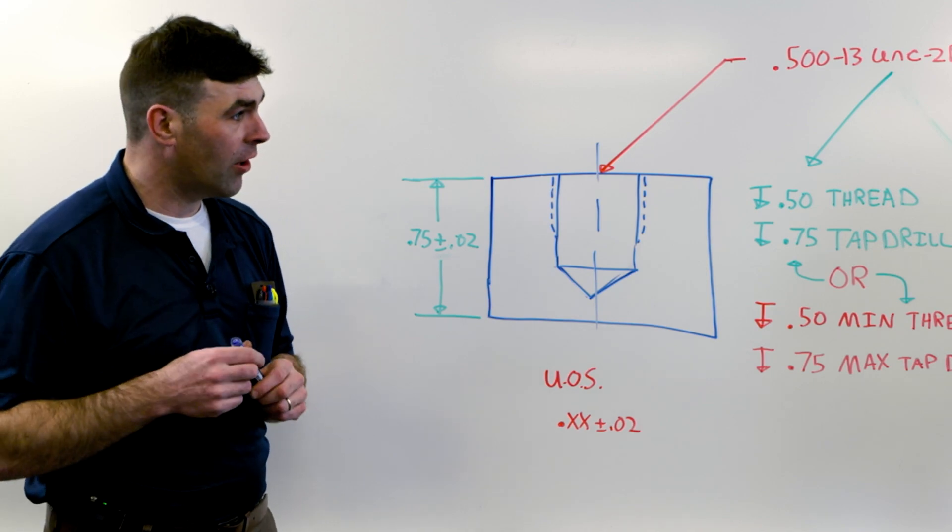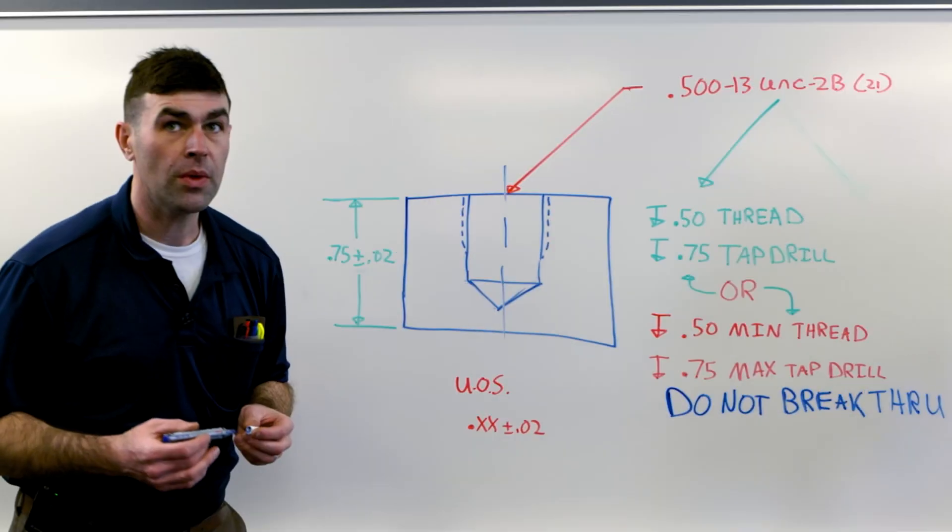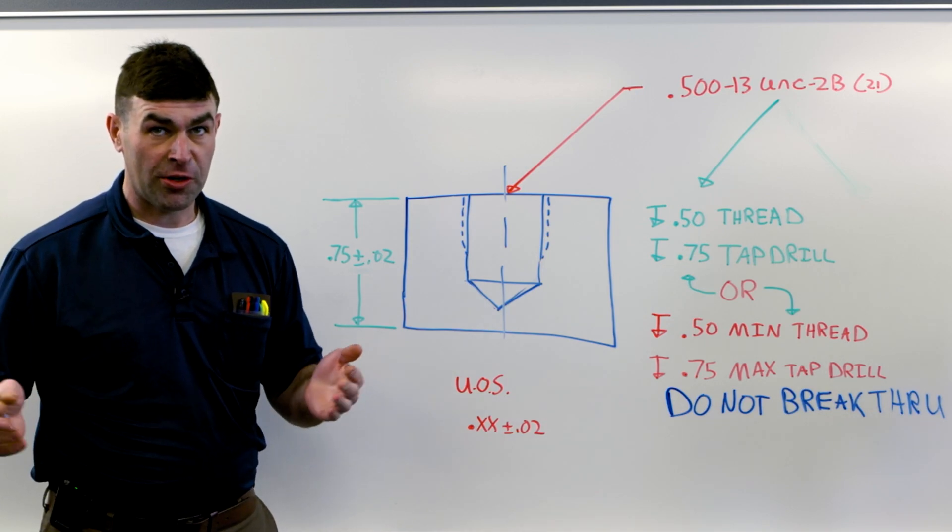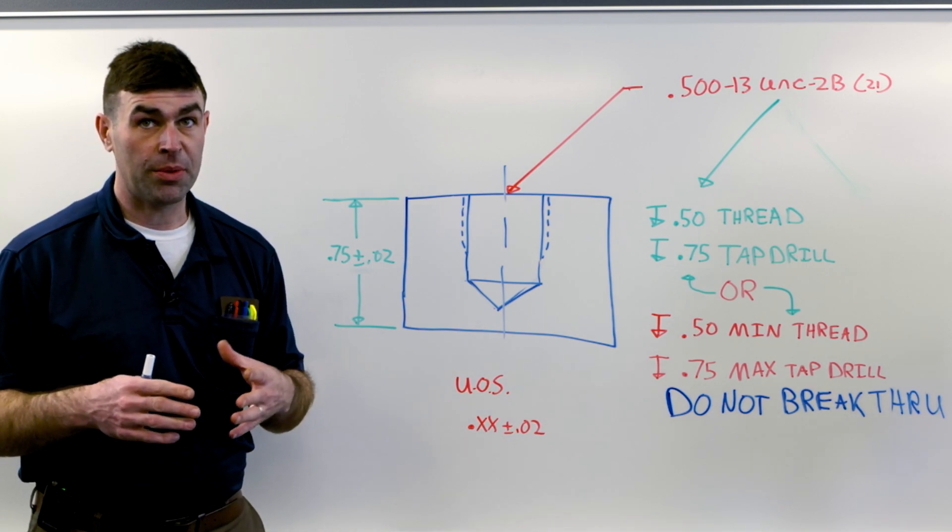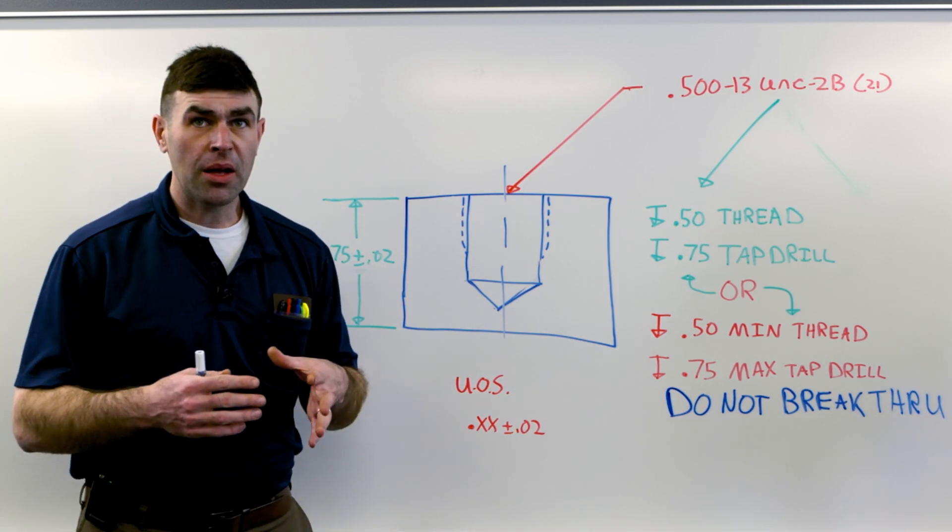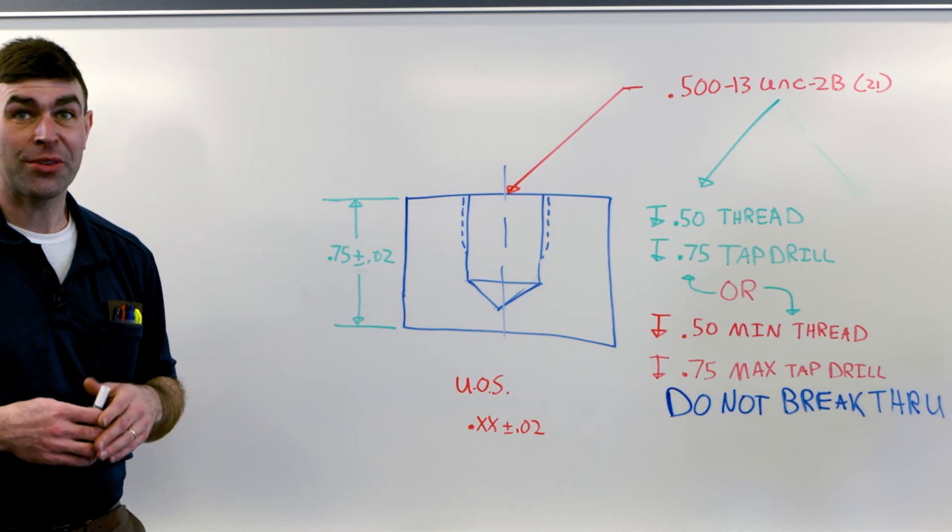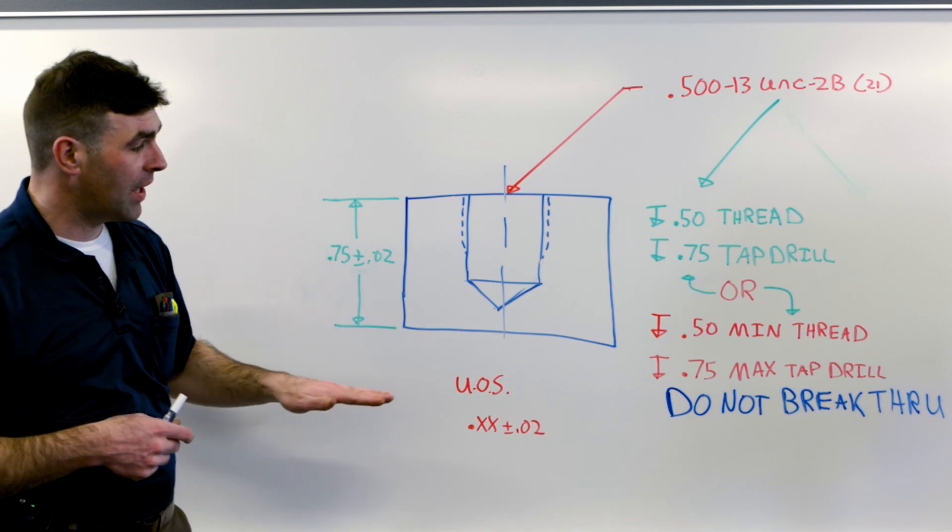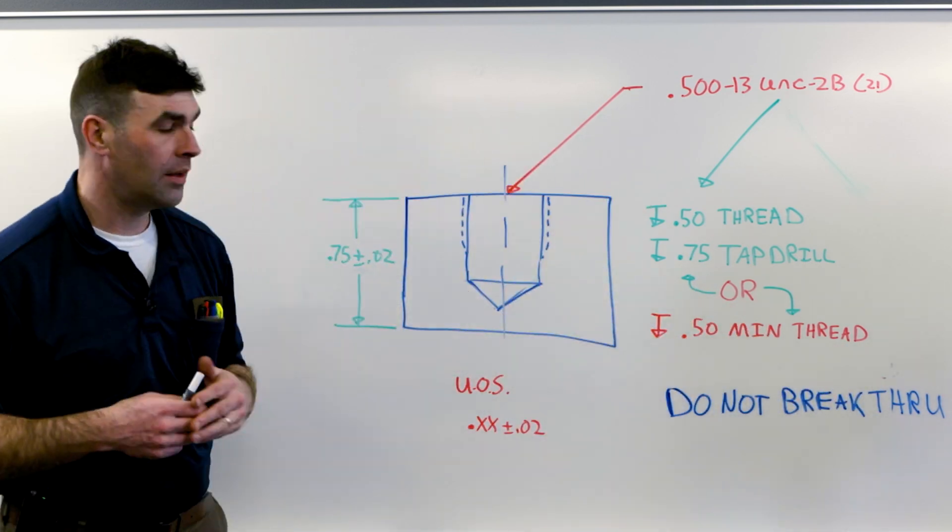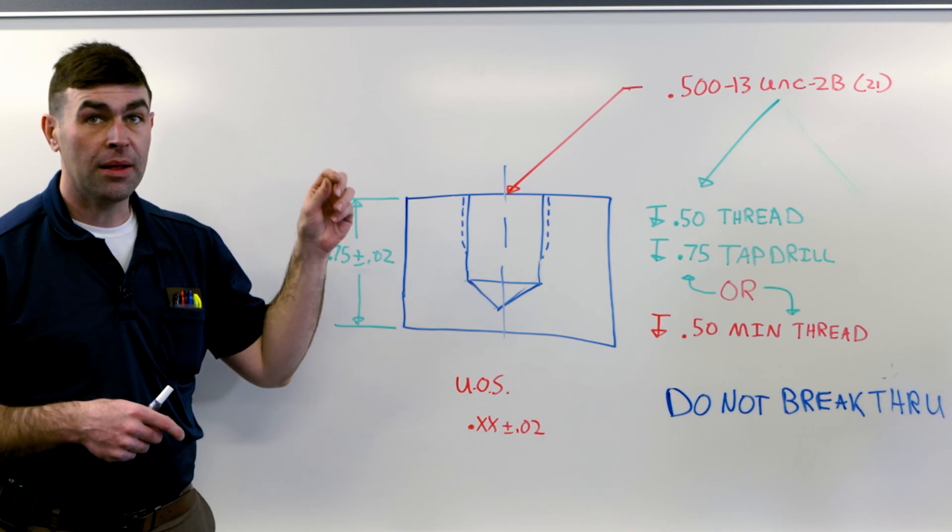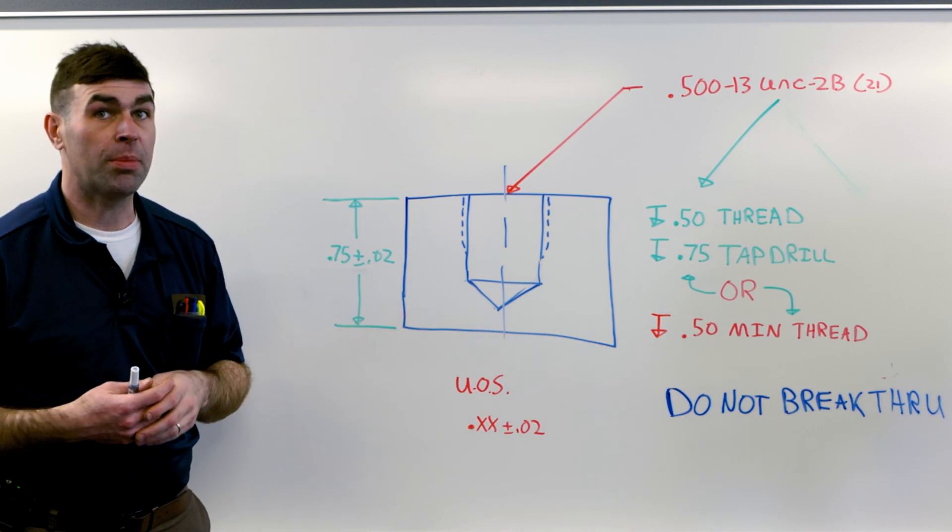Now, a common thing you'll see on drawings is do not break through. Sometimes there's a legitimate reason for this. Maybe it is something that's difficult to calculate. Oftentimes, it's because the designer was essentially taking a shortcut. They may totally omit that dimension and just say, here's the minimum thread and tap as deep as you want, but don't break through.